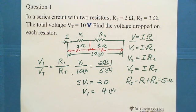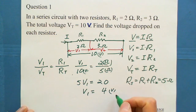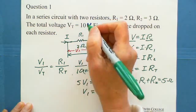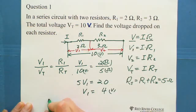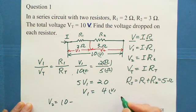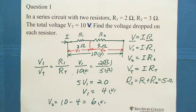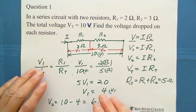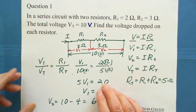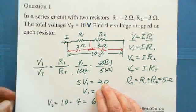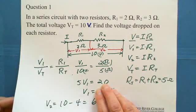If V1 equals 4 volts and the total is 10, then V2 equals 10 minus 4 equals 6 volts. We used ratio proportion to solve the voltage drop on each resistor.